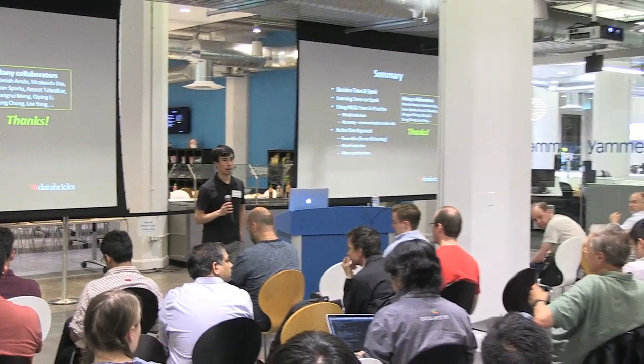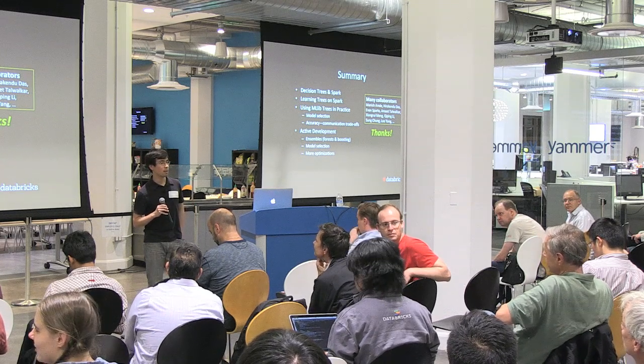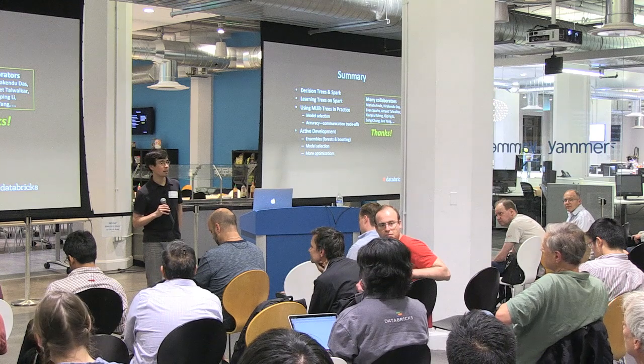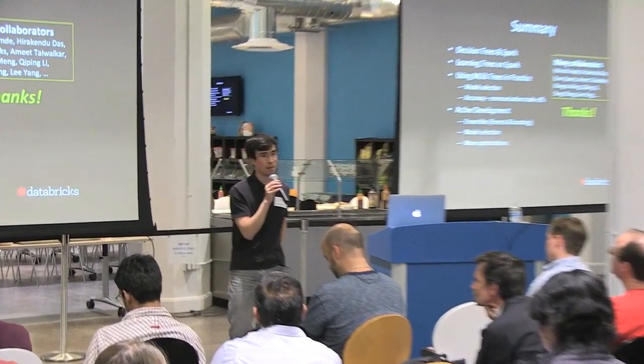Question: does MLlib support locality-sensitive hashing and similar algorithms? I'm not sure if it's there yet, but it's definitely something important. We're always welcoming contributions to the project. Question about Spark certification: I know it does touch on MLlib, but I'd recommend going to the Databricks website for details — I'm not really involved with the certification program.